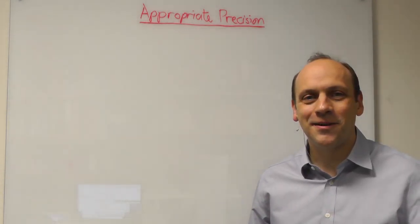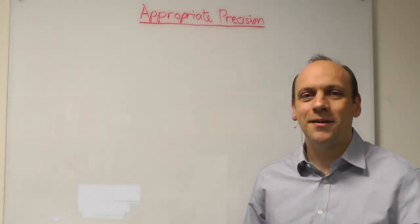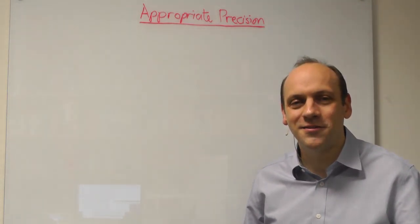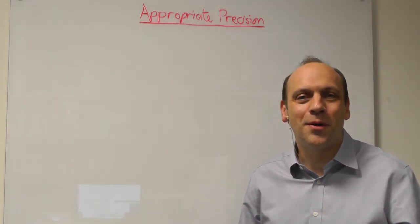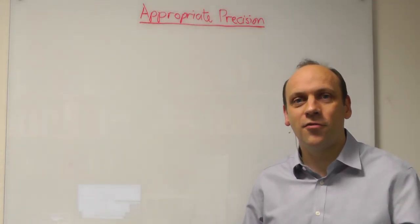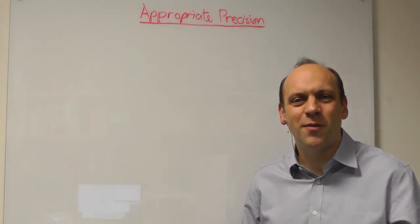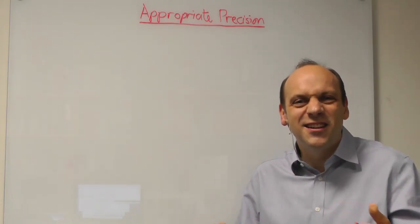Hi there. So in this segment, we're going to talk about appropriate precision. Often, you'll see people writing in lab reports that they measured, say, a concentration of hydrogen in zirconium of 243.4 parts per million. But this is obviously wrong, since we can only measure hydrogen in zirconium to a precision of about 30 parts per million physically.